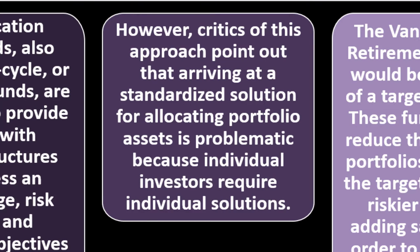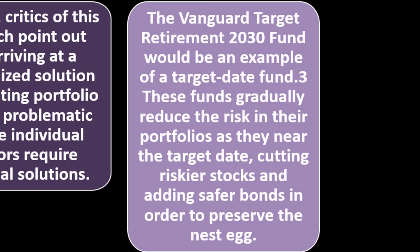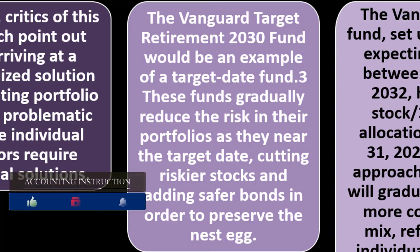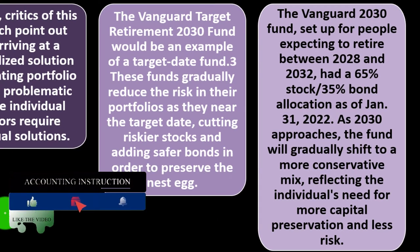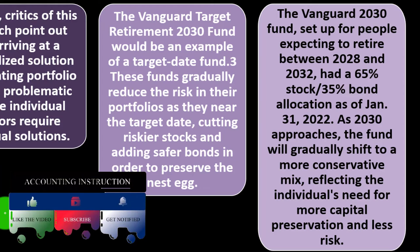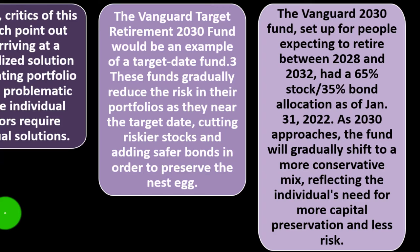The Vanguard Target Retirement 2030 Fund is an example of a target date fund. These funds gradually reduce risk in their portfolio as they near the target date, cutting riskier stocks and adding safer bonds to preserve the nest egg. The Vanguard 2030 Fund, set up for people expecting to retire between 2028 and 2032, had a 65% stock and 35% bond allocation as of June 2022, and will gradually shift to a more conservative mix as 2030 approaches.